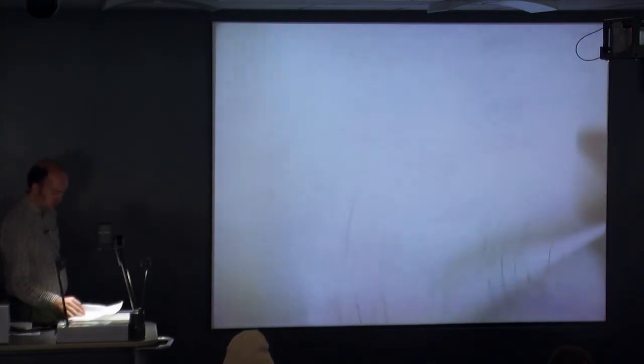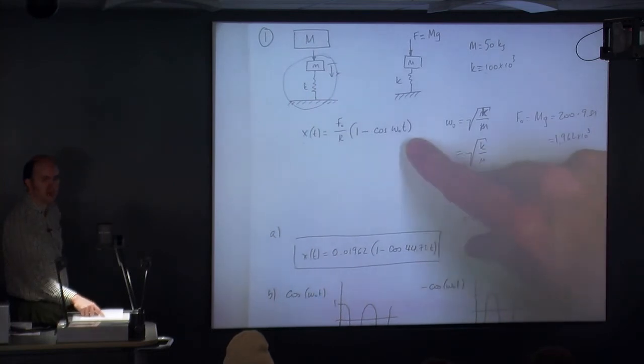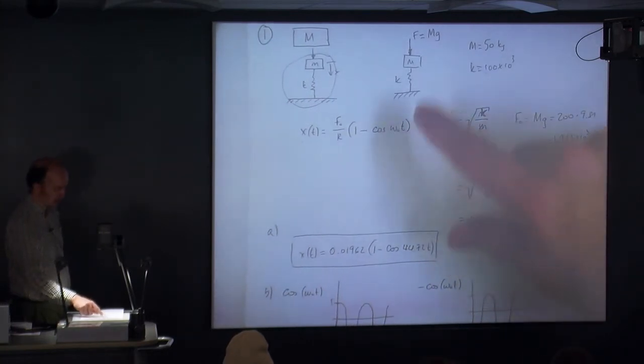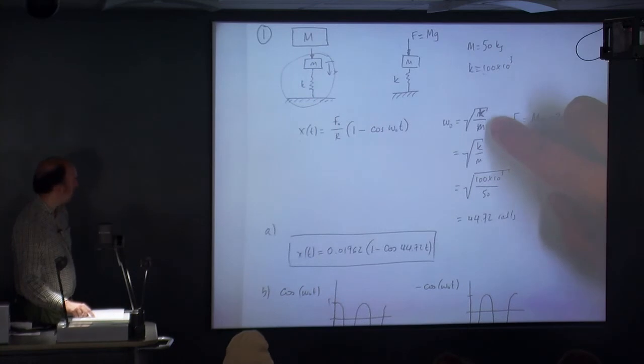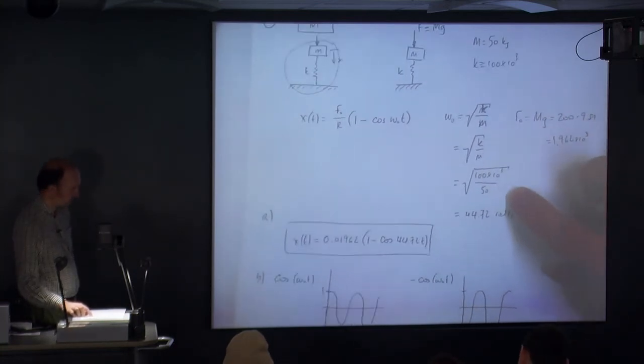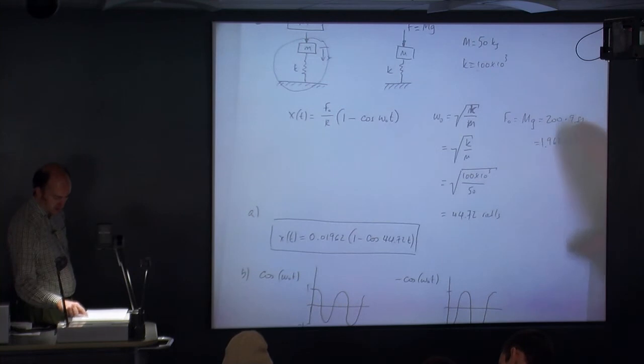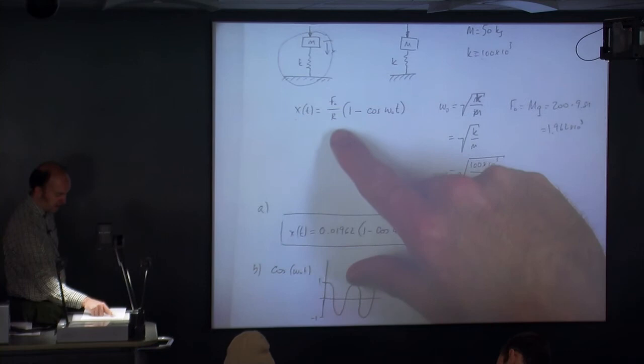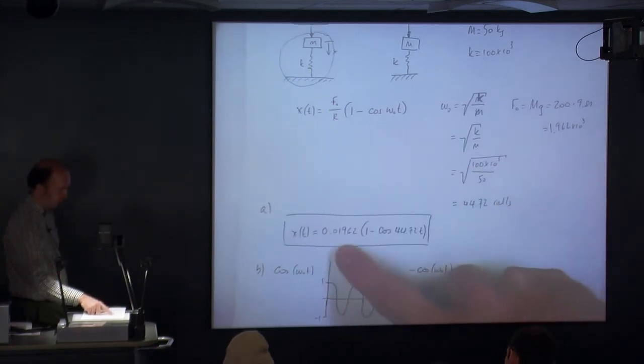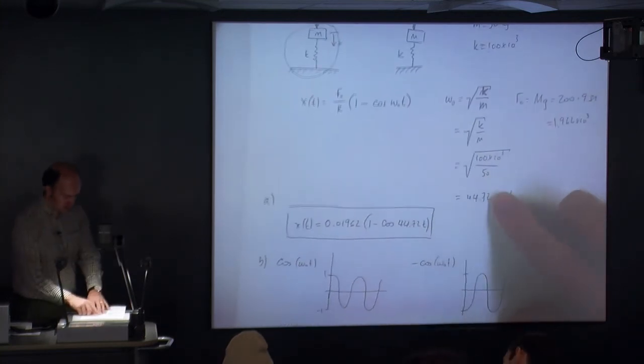So for part a, we've got our system up here with k and m, and there's our solution from your equation sheet. We don't have to go through and solve it. But it's recognising that this system is a constant forcing function, so you know which equation to use. You then apply root k upon m to get omega naught, 44.72. And then f naught quite clearly is big m times by g, 1.962 times 10 to the 3. You take f naught and omega naught and plug them into this equation. You end up getting 0.01962, 1 minus cosine times by 44.72 times time.